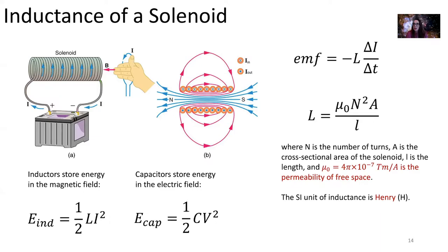Inductance has a unit called the Henry. It's important to note that capacitors store energy in their electric field, and the energy stored in a capacitor is one half times the capacitance times the voltage squared. But inductors store energy in their magnetic field, and the energy stored in an inductor is one half times the inductance times the current squared.